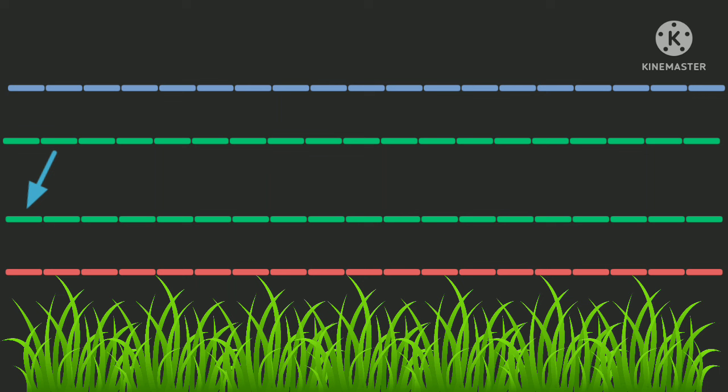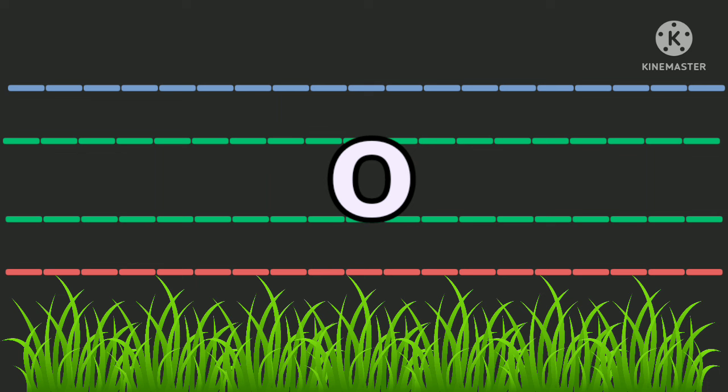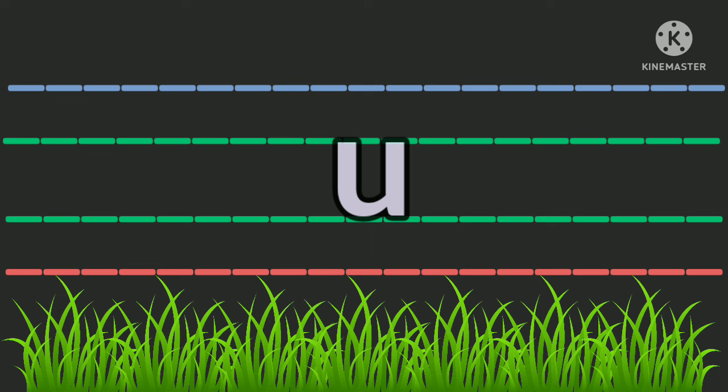Grass letters are: A, C, E, I, M, N, O, R, S, U, V, W, X, Z.